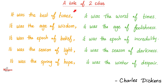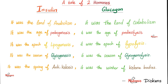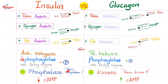Charles Dickens, a tale of two cities — Medicosis is Dickens, a tale of two hormones. It was the land of anabolism; it was the land of catabolism. It was the age of proteogenesis; it was the age of proteolysis. It was the epoch of lipogenesis; it was the epoch of lipolysis. It was the season of glycogenesis; it was the season of glycogenolysis. It was the spring of antiketosis; it was the winter of ketone bodies.